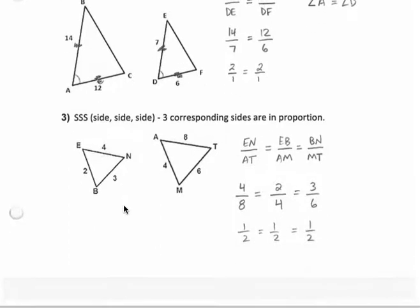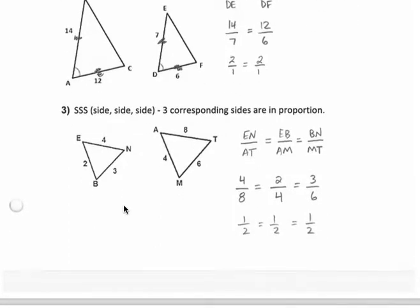The last similarity type is called side, side, side. And that's if we compare all three corresponding sides. If we can see that corresponding sides are in proportion, then the two triangles must be similar. So for example, if I compare the left sides 2 to 4, and the top's 4 to 8, and the right side's 3 to 6, all of those are equal ratios. So these two triangles are in proportion.